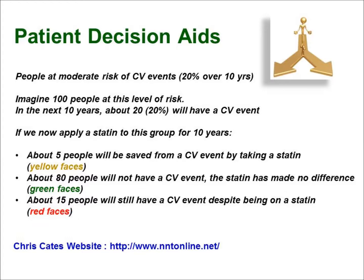15 people are still going to have a cardiovascular event despite being on a statin — these are the red faces, giving us our ART. These people are on treatment but will still have a cardiovascular event. However, I am going to save about five people from a cardiovascular event by putting them on a statin — that's the yellow faces. So I'm reducing risk by saving five people, which is the absolute risk reduction. Because Cates plots are based on 100 people, percentages can be calculated very quickly. The ARC is given by red plus yellow faces, the ART by red faces, and the ARR by yellow faces.